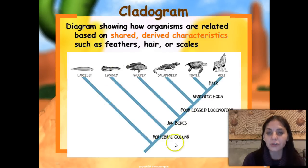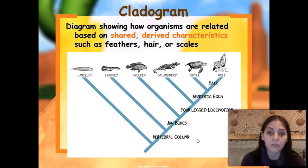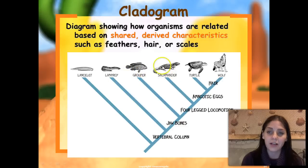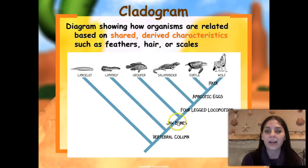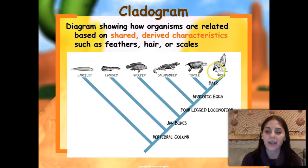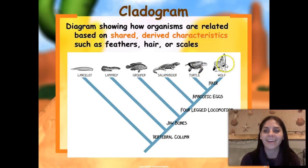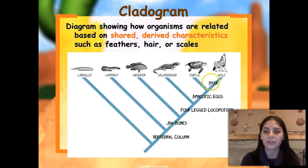Looking at this cladogram: any organism listed after 'vertebral column' will have a backbone. So the lamprey, grouper, salamander, turtle, and wolf all have a vertebral column; the lancelet does not. For jaw bones, the lamprey and lancelet lack them, while the grouper, salamander, turtle, and wolf have jaw bones. For amniotic eggs, only the turtle and the wolf have them. For hair, only the wolf — the last branch — has hair.